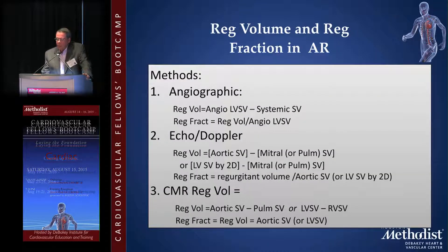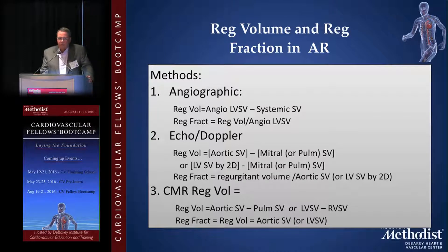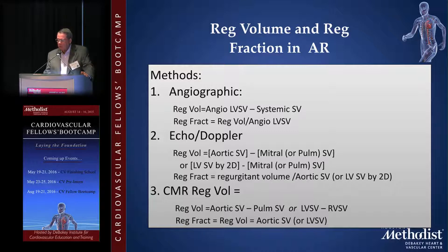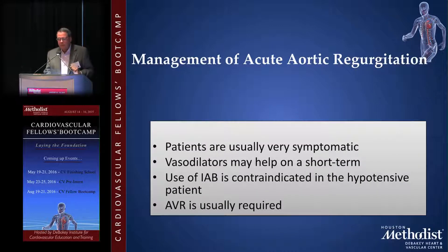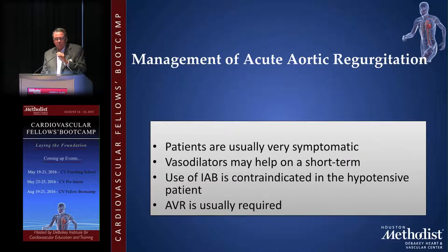Rarely do we do angiographic quantitation anymore. People don't even do an aortic root injection since we have so many other good techniques. EchoDoppler and CMR have truly taken over the assessment of this lesion. For volumes, we compare the aortic stroke volume with the mitral or pulmonic, or do an LV 2D stroke volume and compare to mitral or pulmonic. Rarely do we have to go to TEE for AI, but sometimes if echo quality is not great, we may have to.